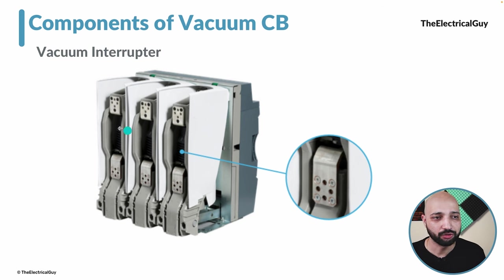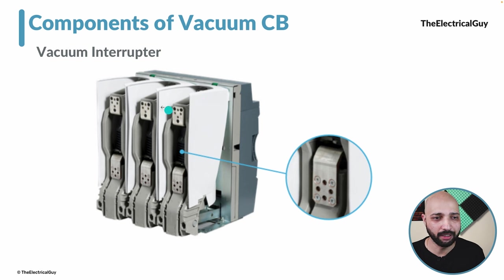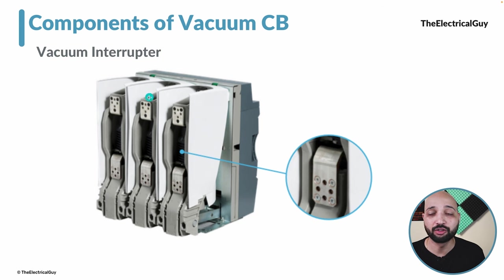This is the vacuum interrupter. The white color sheets you see are the insulation sheets provided for each pole or each phase.